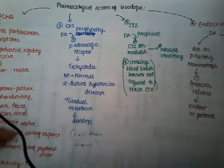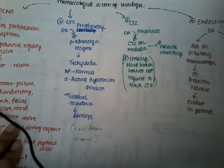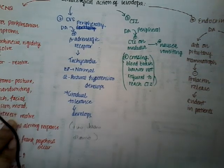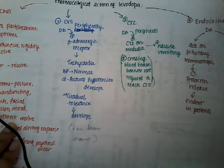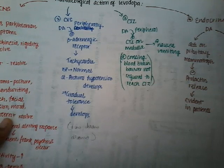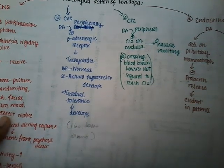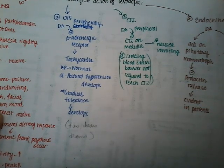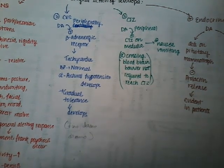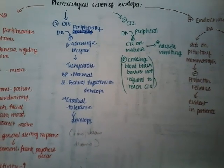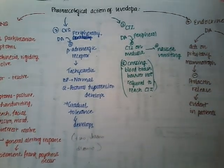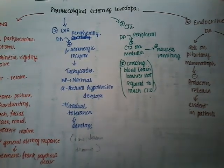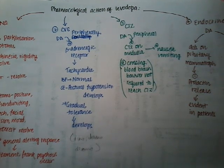Regarding cardiovascular effects: peripherally, dopamine activates beta-adrenergic receptors, which causes tachycardia. Blood pressure may be normal or sometimes postural hypotension may develop. Tolerance to these cardiovascular effects develops slowly.